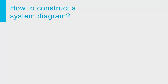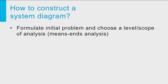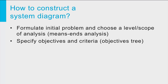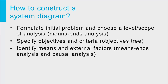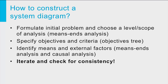Now let's get back to the system diagram and its construction. As a first step, you explore the problem situation and choose the scope of analysis as explained in the video on problem demarcation. Next, you specify the criteria using an objectives tree — the criteria will be the outputs of your system. Third, you identify key system factors that affect the criteria by using means-ends analysis and causal analysis. Eventually, you identify the means that can be used by the problem owner and relevant external factors. Fourth, and this is very important, you should check your diagram for completeness and consistency.